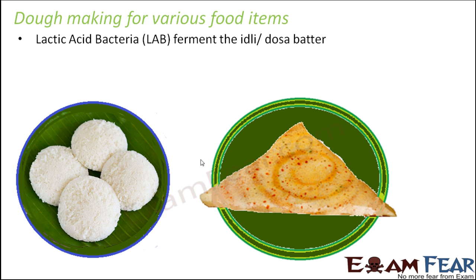The microbe which is mainly involved here is lactic acid bacteria. What is lactic acid bacteria? Just before, we were talking about the curdling of milk and we saw the role of Lactobacillus. Lactobacillus is a type of lactic acid bacteria. These are a group of bacteria which undergo fermentation and convert sugars — that is, lactose — into lactic acid. That is why all these bacteria are termed lactic acid bacteria, often written as LAB. It is not just Lactobacillus; there are many other bacteria which fall under this group.